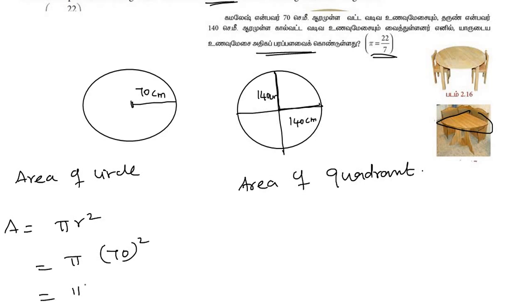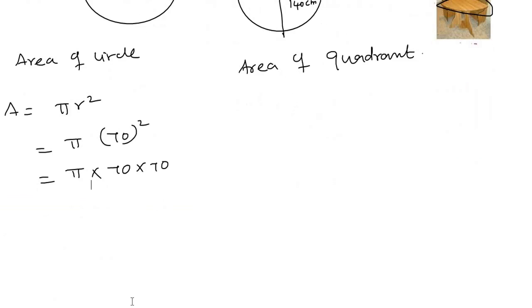That's π into 70 into 70. π equals 22 by 7, so 22 by 7 into 70 into 70. Cancel 7, that's 10 times. So 22 into 10 into 10.